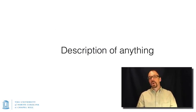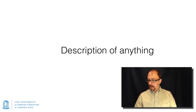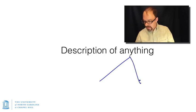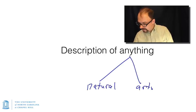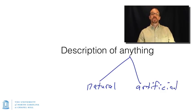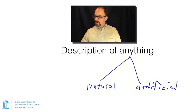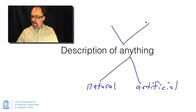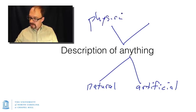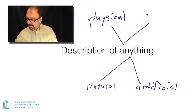Now you can divide the world up in any number of ways. Two ways that we divide the world up in information science pretty frequently are that the world is divided up into natural objects and artificial objects, and very often in information science we deal with the distinction between physical and digital objects.